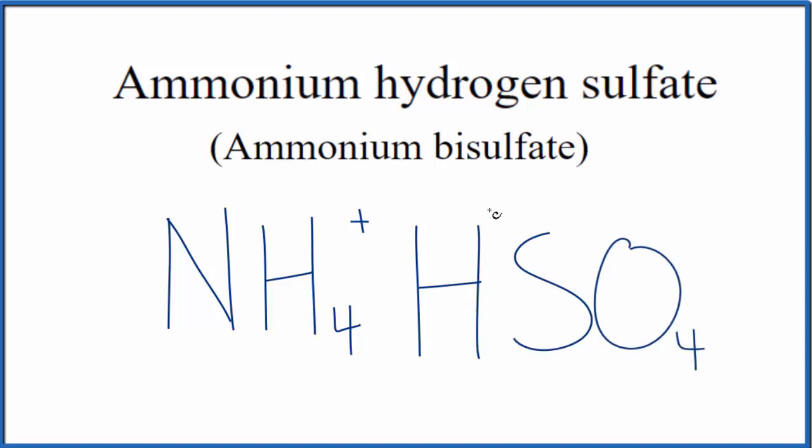And we know that hydrogen is 1 plus and the whole sulfate is 2 minus. So this whole ion here, this polyatomic ion, the bisulfate or the hydrogen sulfate ion, has a 1 minus ionic charge.